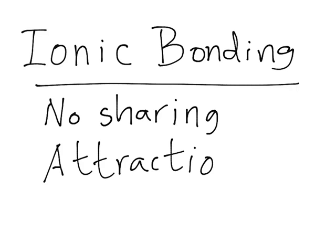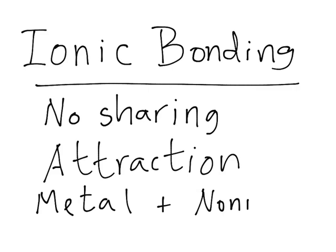These bonds exist because of attraction — no sharing. Another thing that makes ionic bonds different from covalent bonds is that they occur between a metal and a nonmetal. So if you are given a molecule and want to determine if it's ionic or covalent, you can check: two nonmetals means covalent, while a metal and a nonmetal means ionic bonding.